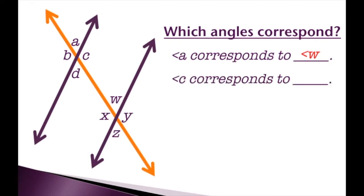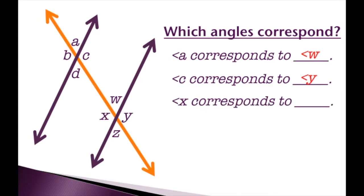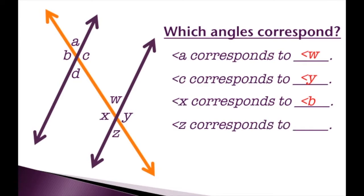Angle C is our top right angle here. The top right angle on the other side is angle Y, so C corresponds to angle Y. Angle X is the bottom left angle over here, so it corresponds to the bottom left angle on the other side — that's angle B. Angle Z is our bottom right angle, so it corresponds to the bottom right angle on the other side, which is angle D.